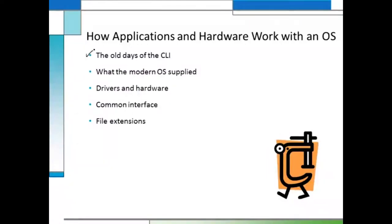I want to talk first about the history — and you'll hear me repeat this a few times — just to make sure we're clear about the importance of an operating system. In the old days and even today, the operating system is supposed to be a way of interacting between you, the user, and the hardware, like maybe a printer connected to your computer.